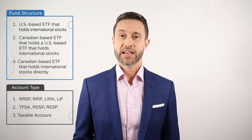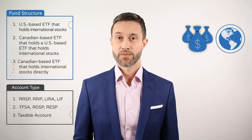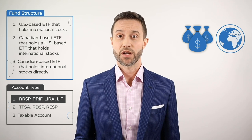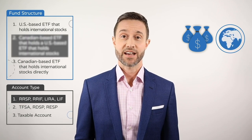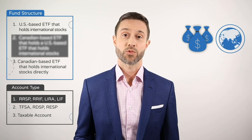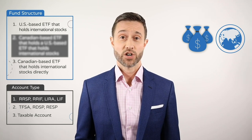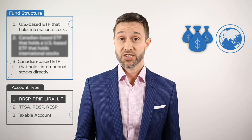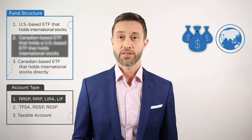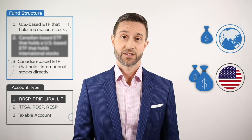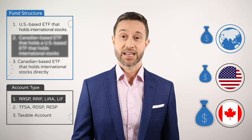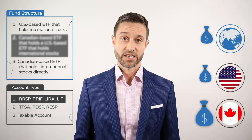Next, let's look at tax-efficient international equity ETFs. When choosing between the three international equity ETF structures for your RRSP or RIF, you can immediately scratch one off your list: a Canadian-based ETF that holds a US-based ETF that holds international stocks. When this fund type is held in an RRSP or RIF, foreign dividends are first paid to the US-based fund, generating a layer of withholding taxes. The net dividends are then paid from the US-based ETF to the Canadian-based ETF, creating another layer of withholding taxes.